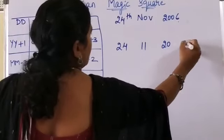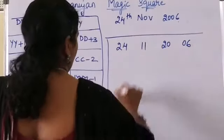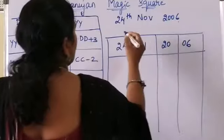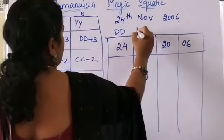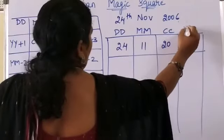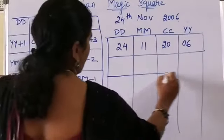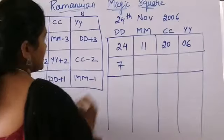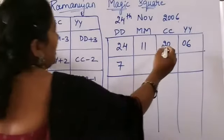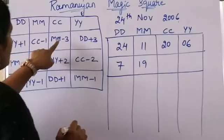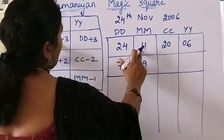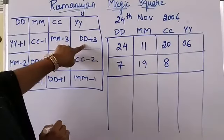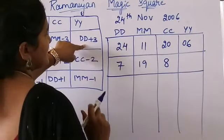For 24th November 2006: the first row is DD=24, MM=11, CC=20, YY=6. For the second row: YY+1 = 6+1 = 7; CC-1 = 20-1 = 19; MM-3 = 11-3 = 8; DD+3 = 24+3 = 27.